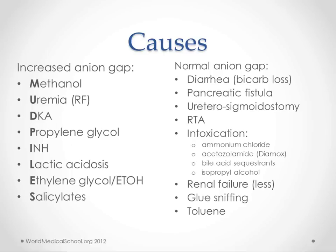The mnemonic MUD PILES stands for the main causes of increased gap acidosis: Methanol, Uremia, DKA, Propylene glycol, INH, Lactic acidosis, Ethylene glycol or alcohol, and Salicylates. Those are the main causes of increased anion gap acidosis.